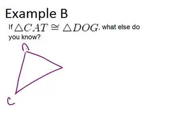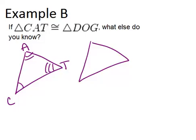So CAT is congruent to triangle DOG. Now remember that a congruent statement means that the letters have to match up.